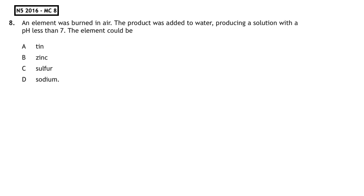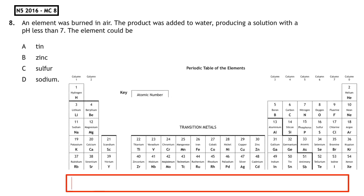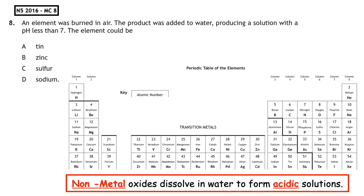This question is from the National 5, 2016, multiple choice 8: 'An element was burned in air. The product was added to water, producing a solution with a pH less than 7. The element could be...' We know that if it's got a pH less than 7, it must be an acid. Non-metal oxides dissolve in water to form an acidic solution. So if we identify the position of each element in the periodic table, we can see that the only non-metal element is sulfur.